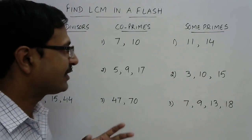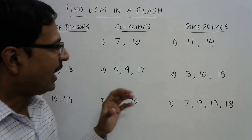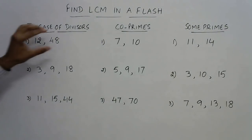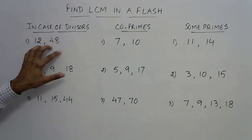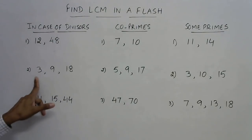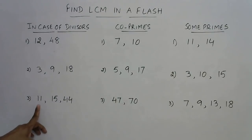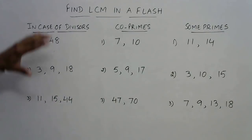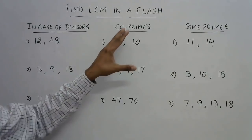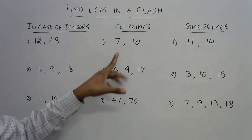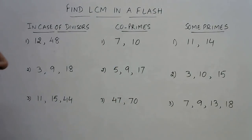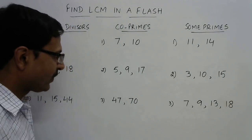I'll take up this video in three different parts. The first one is when we have divisors — like the numbers given here will involve divisors: 12 is a divisor of 48, 3 is a divisor of 9, 9 is a divisor of 18, and likewise 11 is a divisor of 44. In this case the procedure is very simple. Then in the case of co-primes — that is, numbers which do not have any common factor other than 1, like 7 and 10.